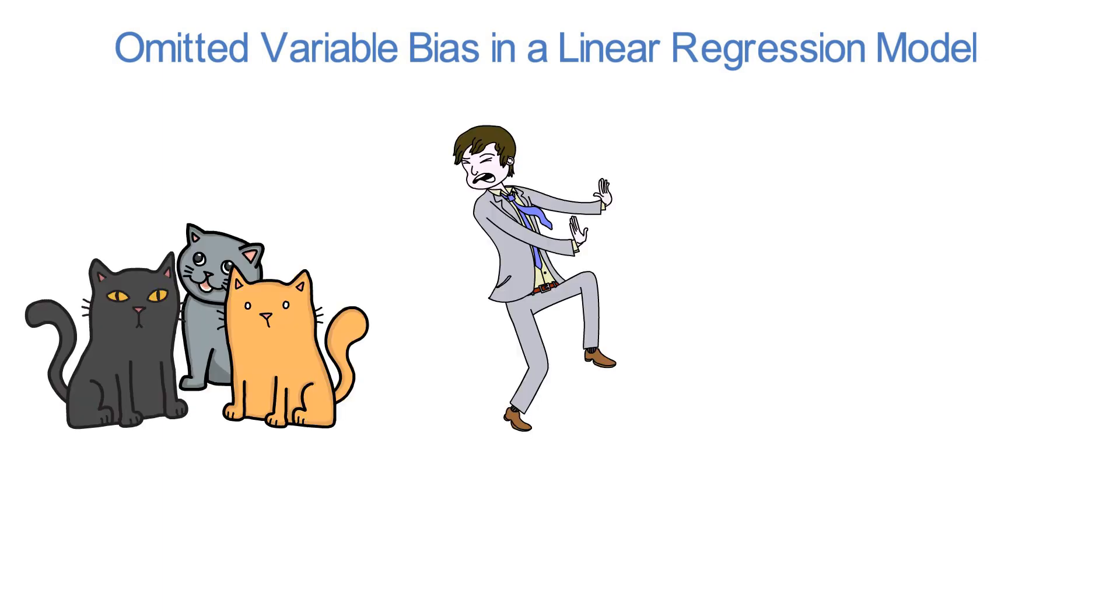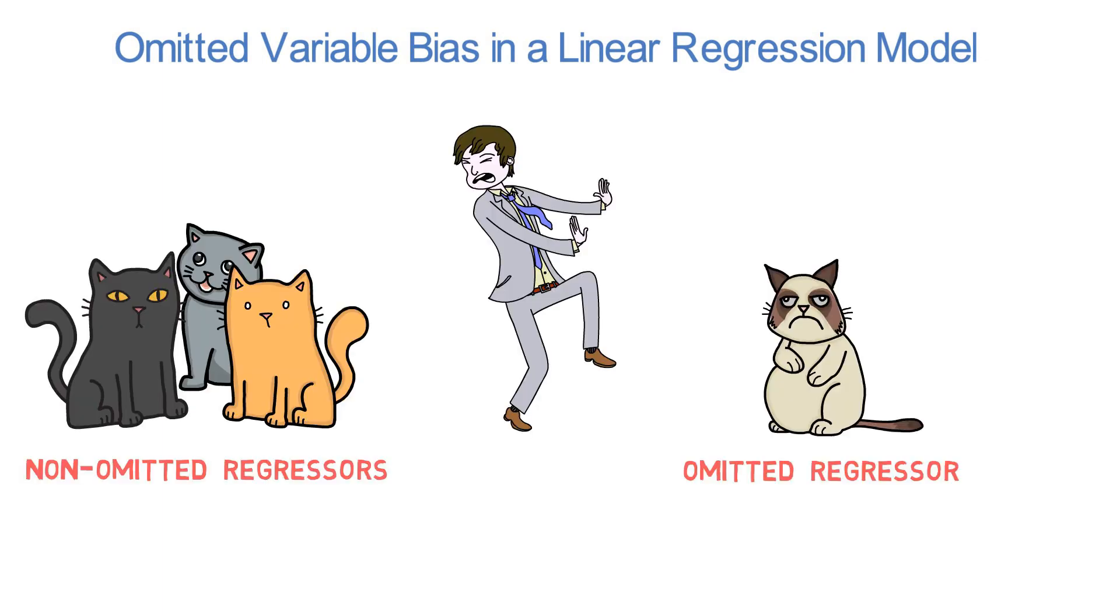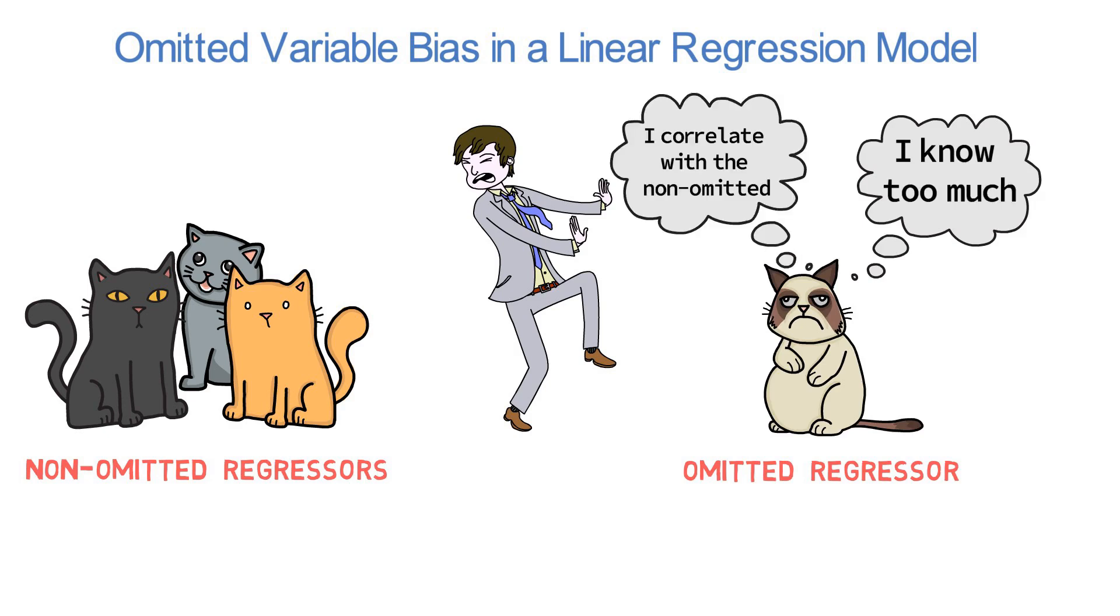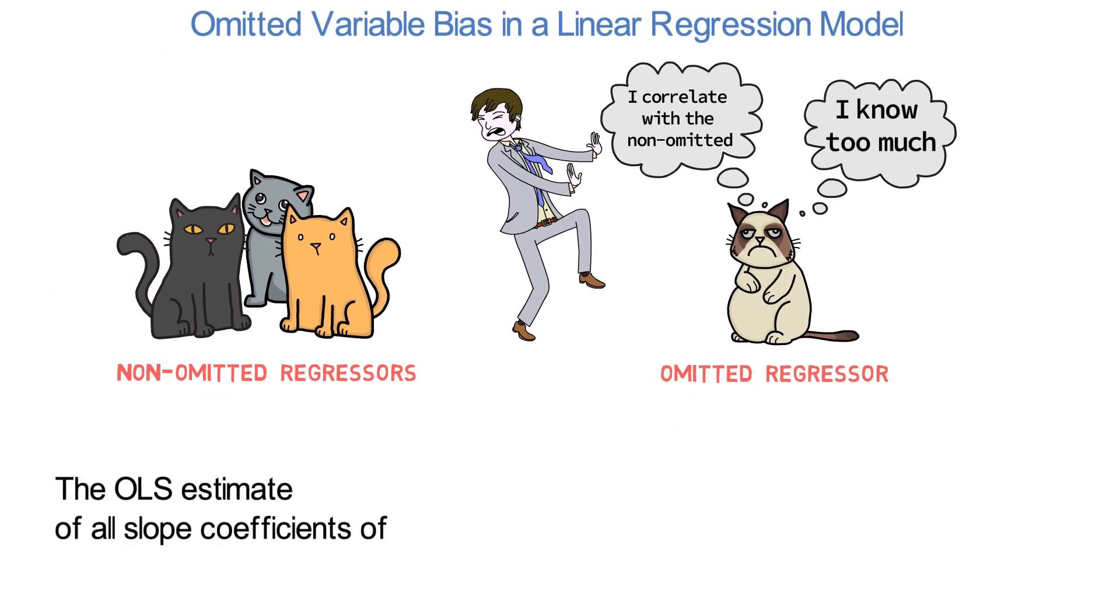refers to omitting a regressor which contains information about y and correlates with the non-omitted regressors. The OLS estimate of all slope coefficients of the non-omitted regressors will be biased. The bias only vanishes if the omitted regressor has a correlation of zero with the non-omitted regressors.